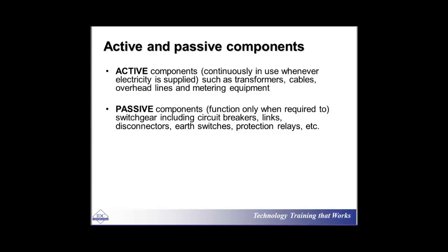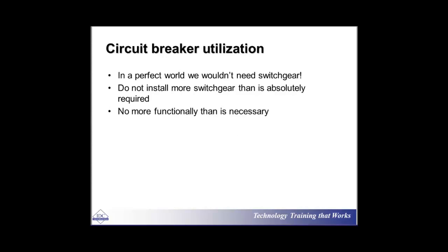We can classify all components of a power system into active and passive. Active components are always in service — constantly being used — like transformers, cables, overhead lines, and metering equipment. Passive components are there but may not be in use at all times — like circuit breakers, which are used whenever switching is required; protection relays, which operate only when there is a fault; earth switches, which operate whenever you want to make an earthing connection; and disconnect or isolator switches.